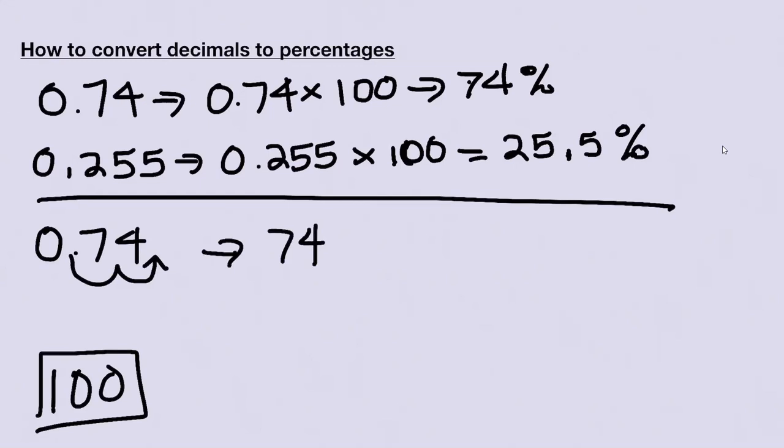Same would go for the 0.255. If I wanted to do it the quick and easy way, just move your decimal point and that'll leave you with 25.5%. Now let's say you get kind of a weird one: 1.35.